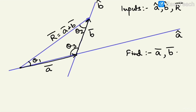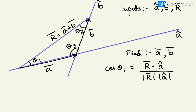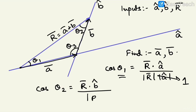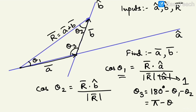First we have to find the angles theta1, theta2, and theta3. As we learned in the previous class, cos(theta1) equals R vector dot â-cap divided by modulus of R times modulus of â-cap, which is 1. Similarly, cos(theta2) equals R vector dot b̂-cap divided by modulus of R. And theta3 you can find using the law that the sum of internal angles of a triangle is 180 degrees, so theta3 equals pi minus theta1 minus theta2.